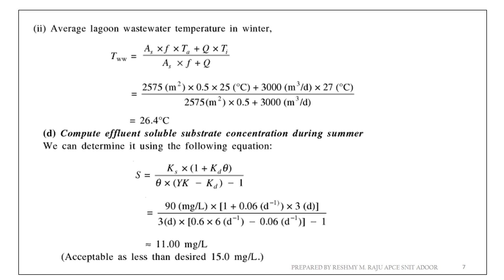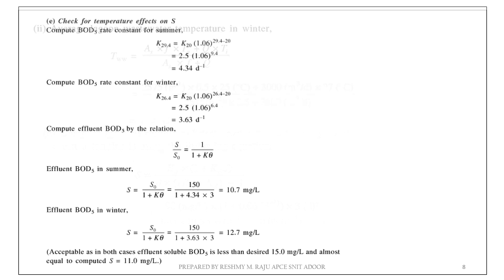The next step is to compute the effluent soluble substrate concentration during summer. We use the K value — KS and KD — assuming given values of 11 mg/L. The effluent soluble BOD is 15 mg/L. The computed value is less than the desired 15 mg/L, so it is acceptable. Now let us check the temperature effect: the BOD rate constant for summer, K20, is 1.06 raised to the power (29.4 − 20).